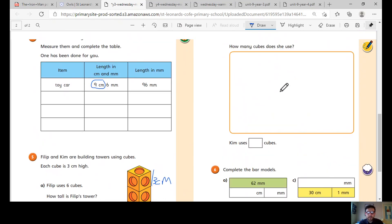how many 30s, because it's 30 millimetres in three centimetres, there are in 300. To make it easier, we could turn this into centimetres. So how many centimetres are there in 300?